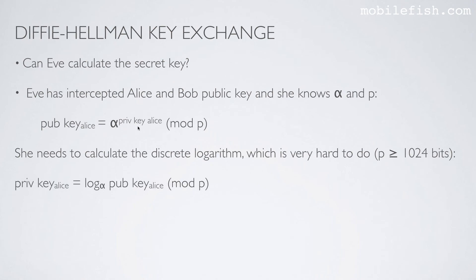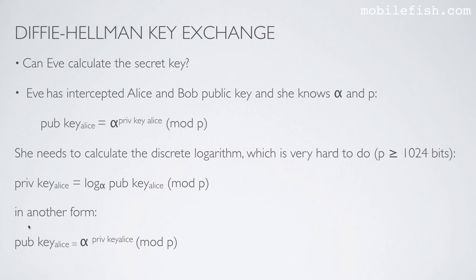To calculate Alice's private key, Eve writes this equation: private key of Alice is log base alpha of public key of Alice mod p. In another form you can also write it as: public key of Alice equals alpha to the power of private key of Alice mod p. And if you watched my previous video regarding discrete logarithm, you know that solving a discrete logarithm is very hard to do. To answer the question — can Eve calculate the secret key? — the answer is no.